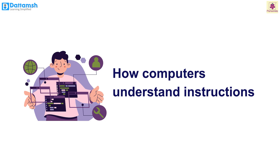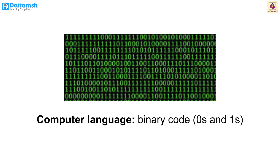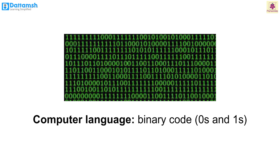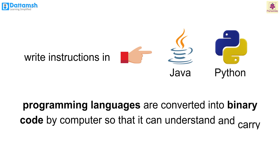Now let's understand how computers understand instructions. Computers don't speak our languages — they use a computer language called binary code. Binary code is a series of zeros and ones. When you write instructions in a programming language like Python or Java, the computer changes them into binary code so it can understand and carry out the tasks.